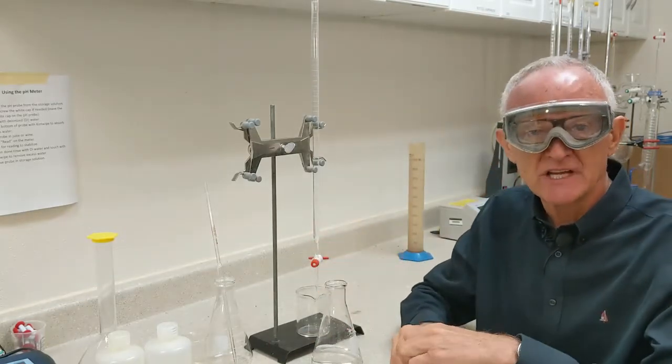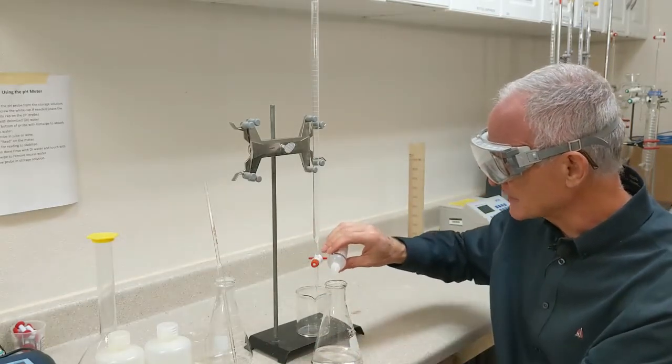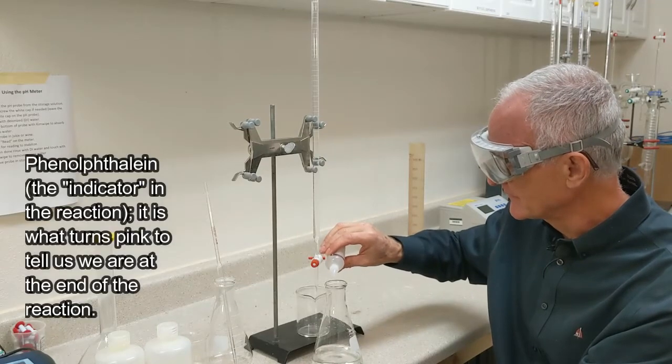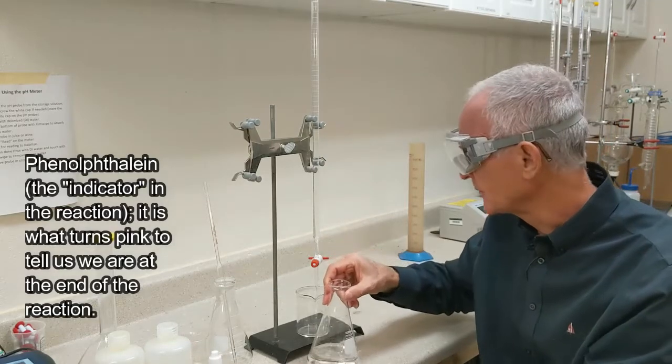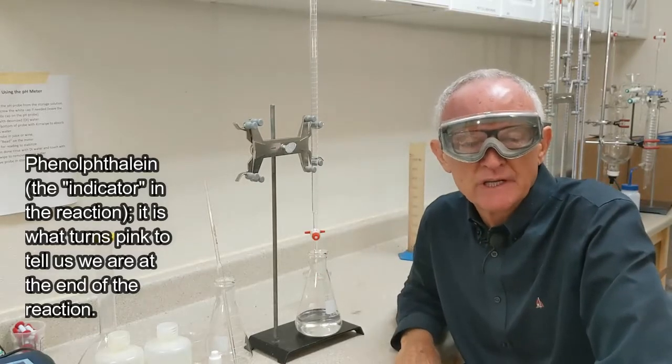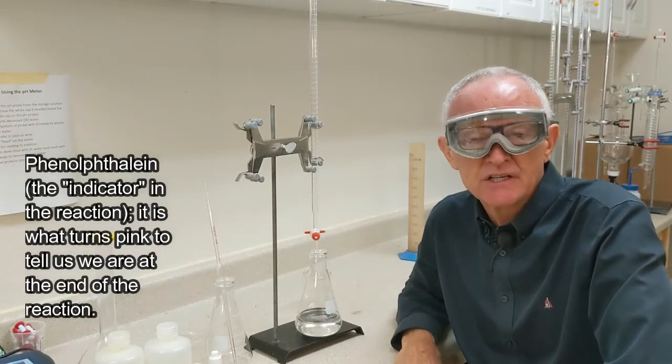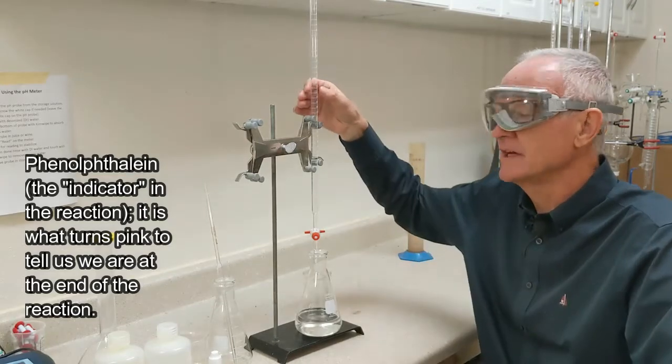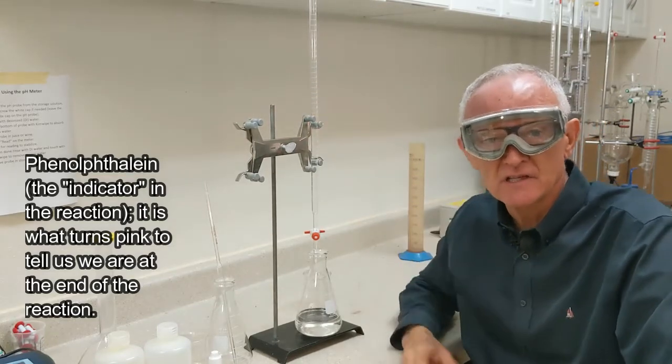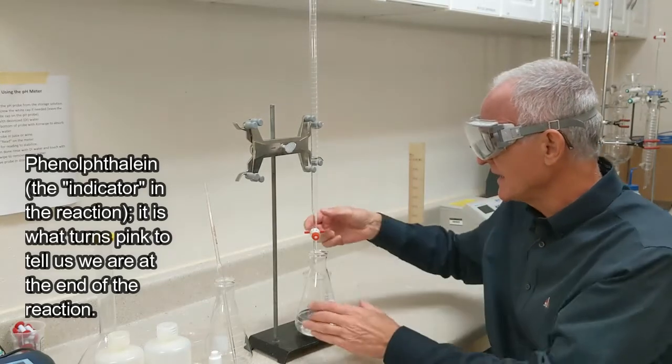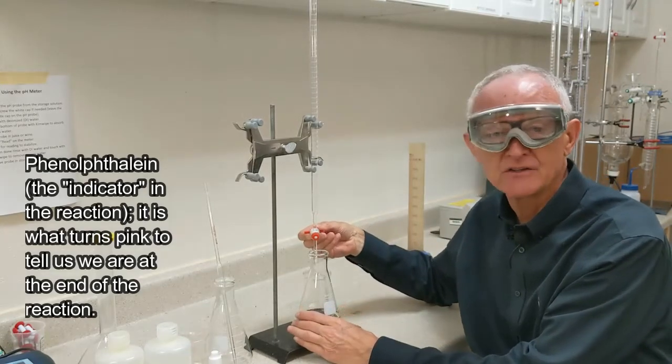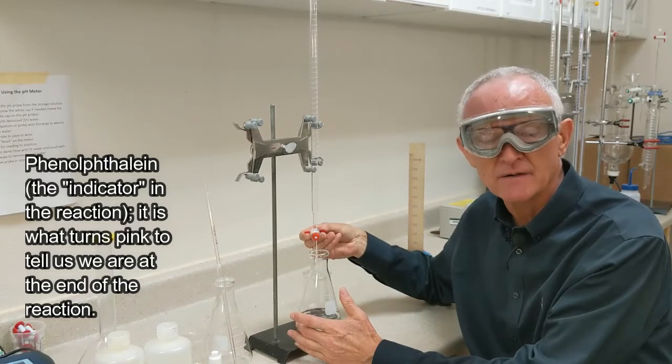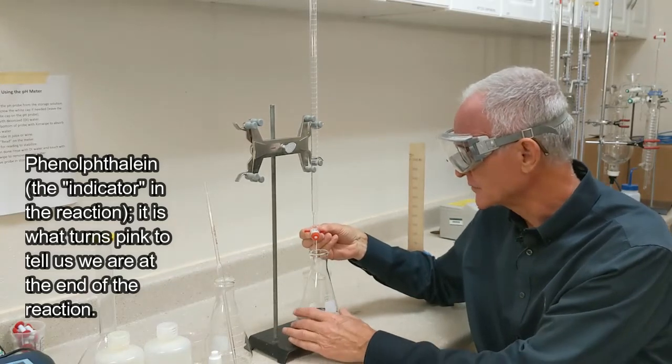So what I'll do first is add my four or five drops of phenolphthalein. Swirl that around a little bit. Now when you're first doing a titration, it's good to get used to how to drip the phenolphthalein or the sodium hydroxide in your burette fairly slowly into the flask.